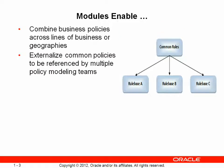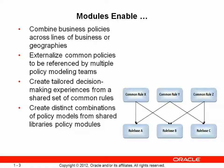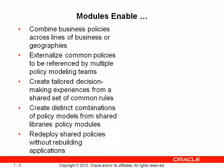A single version of common rules or policies are managed independently and shared across several projects or policy models. Multiple decision-making experiences or interfaces are built from a shared single copy of core determinative rules. Distinct combinations of modules may be combined into multiple policy models to more easily model source material with cross-references to shared policies. And all policy modules support hot-swap deployment so policy changes can go live without rebuilding applications or restarting servers.